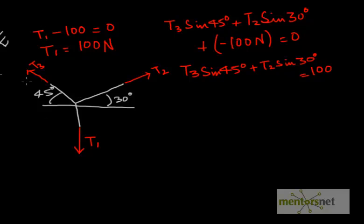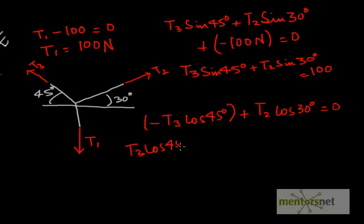Secondly, horizontal force balance. The horizontal component of T3 is T3 cos 45 degrees. Since it's pointing to the left, there's a negative sign involved. So minus T3 cos 45 degrees plus the horizontal component of T2 is T2 cos 30 degrees and it's positive is equal to zero. So simplifying this, T3 cos 45 degrees is equal to T2 cos 30 degrees.